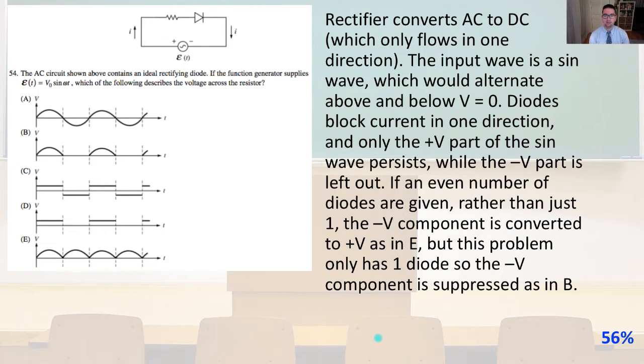so the input wave is a sine wave, and this would alternate above and below V equals zero. But diodes block current in one direction, and only the positive V part of the sine wave persists, while the minus V part is left out. For another example, if an even number of diodes are given rather than just one, the minus V component is converted to positive V as in answer E, but in this problem it only has one diode, so the minus V component is suppressed just as in answer B.